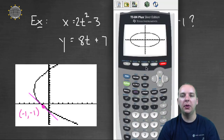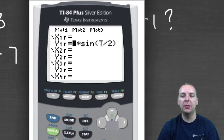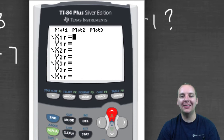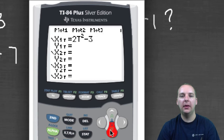Let me pull up our TI. Mine's already in parametric mode, so I just have to clear out some old stuff I was working on. Then I'll enter the x in — that was 2t squared minus 3 — and the y was 8t plus 7.